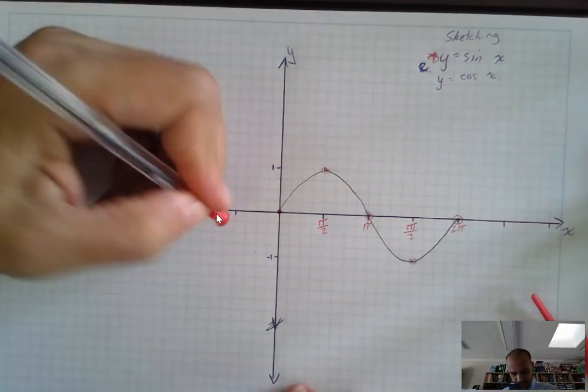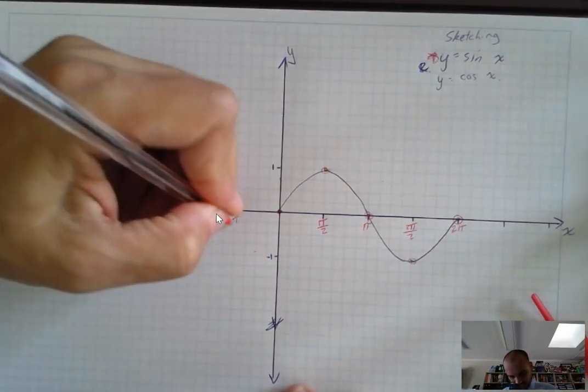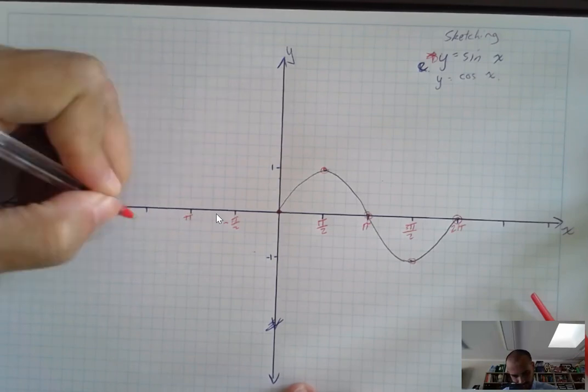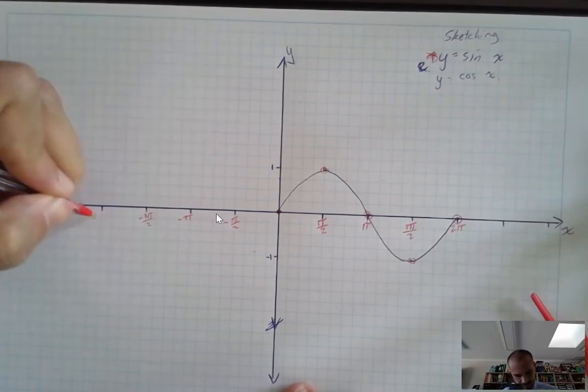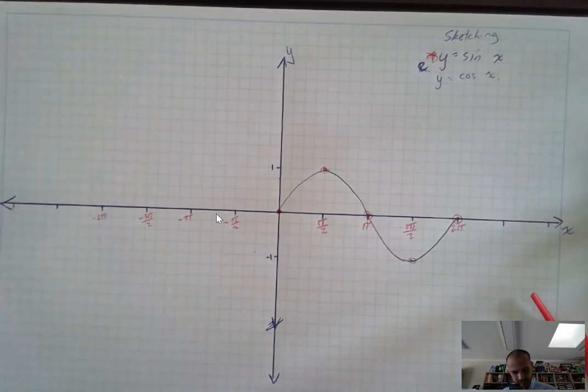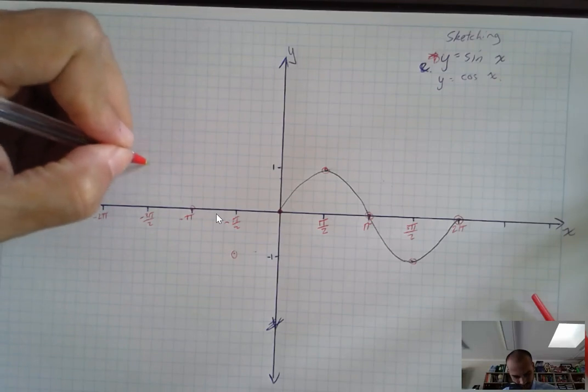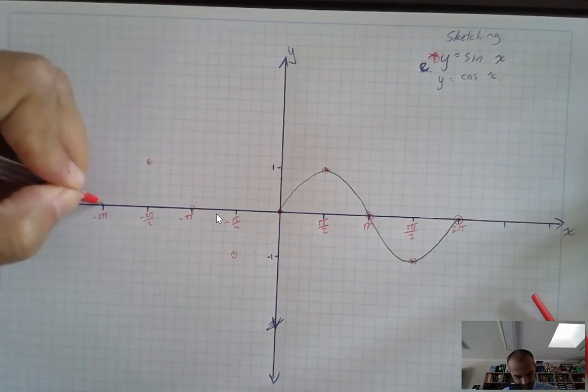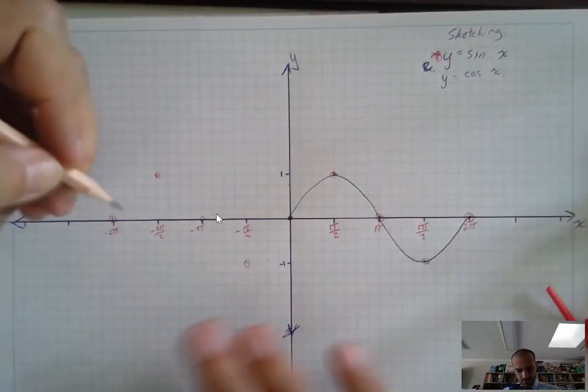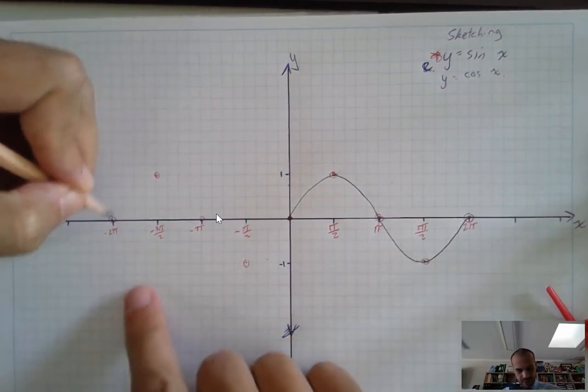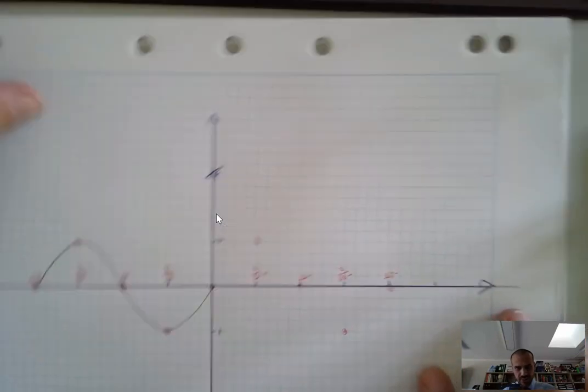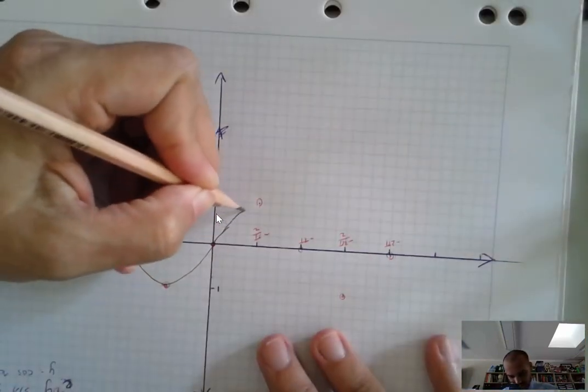And we can do the negative side as well. Negative pi on two, pi, negative three pi on two. That should be negative pi. Negative two pi there. And again, I'm going to put in the points that I'm going to aim for. And then I'm going to try to be as fluid as possible. I might just turn it upside down and, oh, there you go. Now I can just do the same thing I just did.